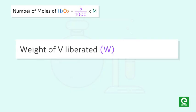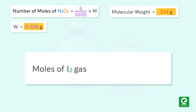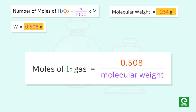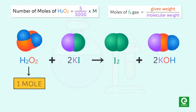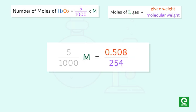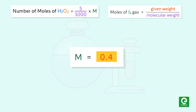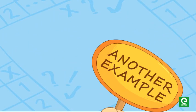Weight of iodine liberated W = 0.508 g; molecular weight of iodine = 254 g. Therefore moles of iodine = 0.508/254. From the balanced chemical equation, one mole of H₂O₂ liberates one mole of iodine, so 5/1000 × M = 0.508/254, giving molarity M = 0.4. Volume strength = 11.2 × M = 11.2 × 0.4 = 4.48 V.